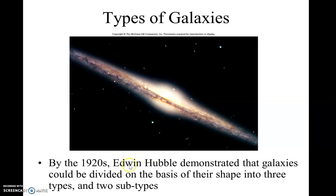Hubble, as I mentioned, Edwin Hubble in the 1920s was working at Mount Wilson Observatory in California. It used to be the most powerful telescope in the world, but it's almost not used today because of the incredible light pollution due to Los Angeles — it's just above Los Angeles — which pretty much makes that telescope useless.